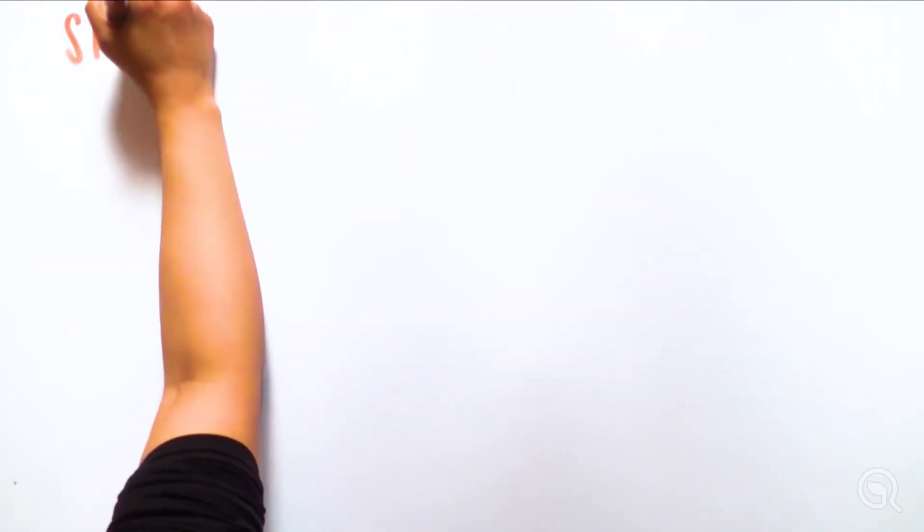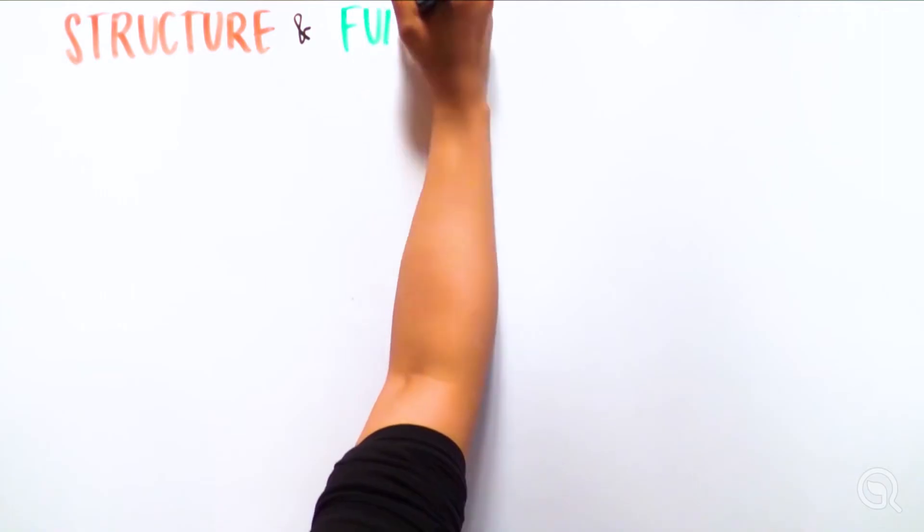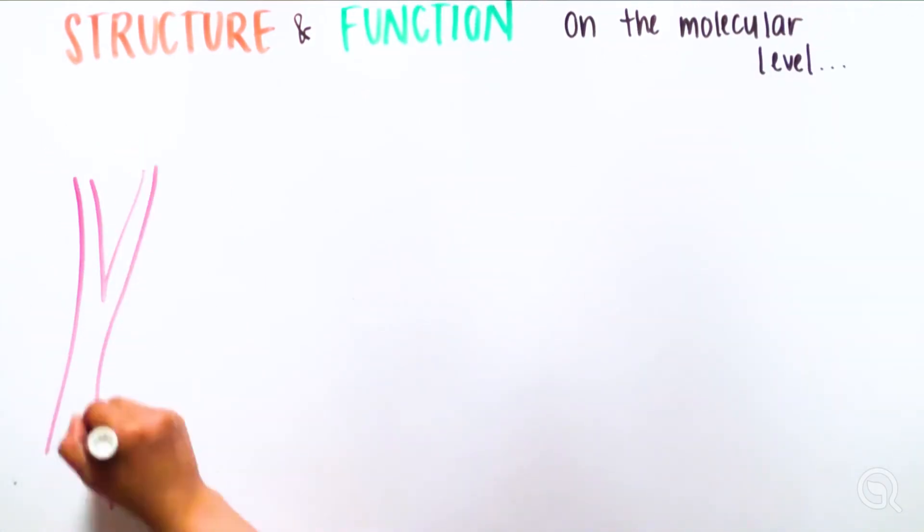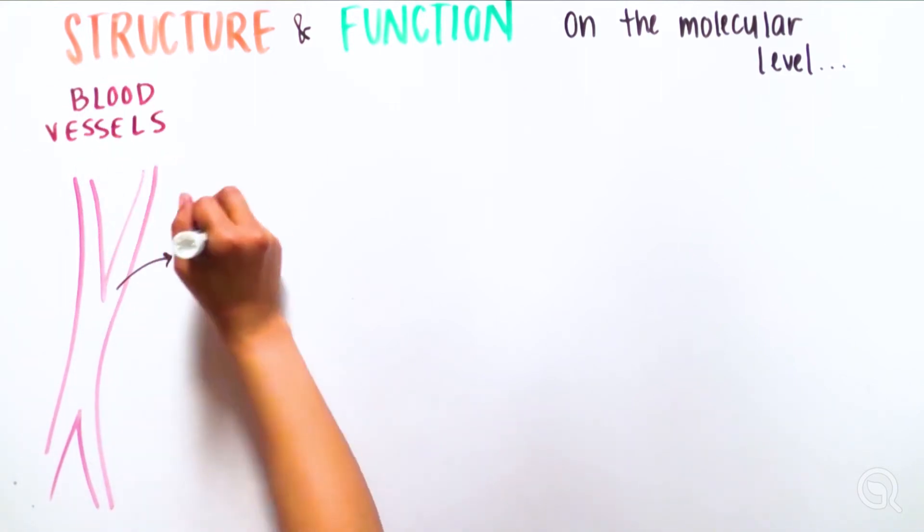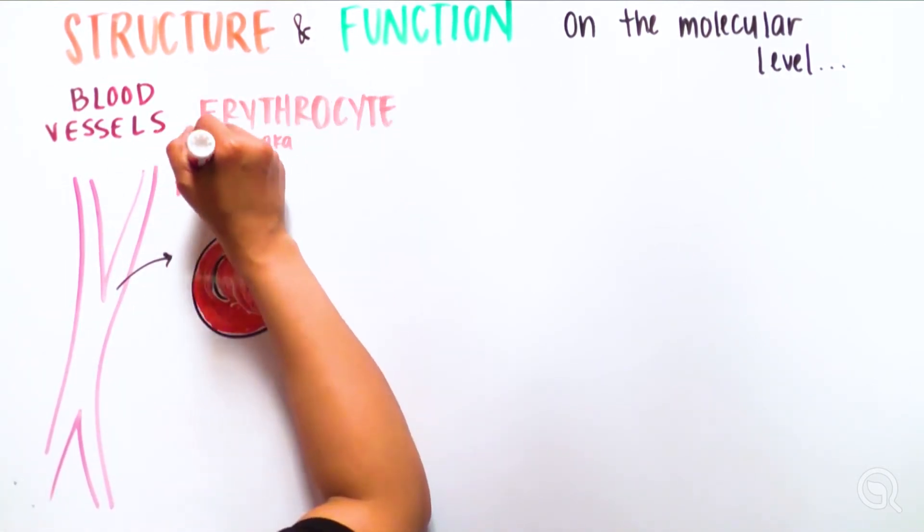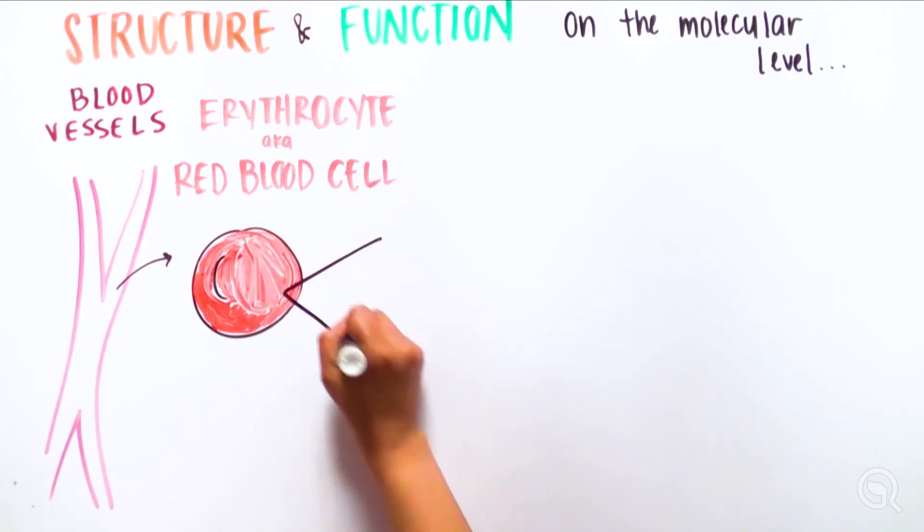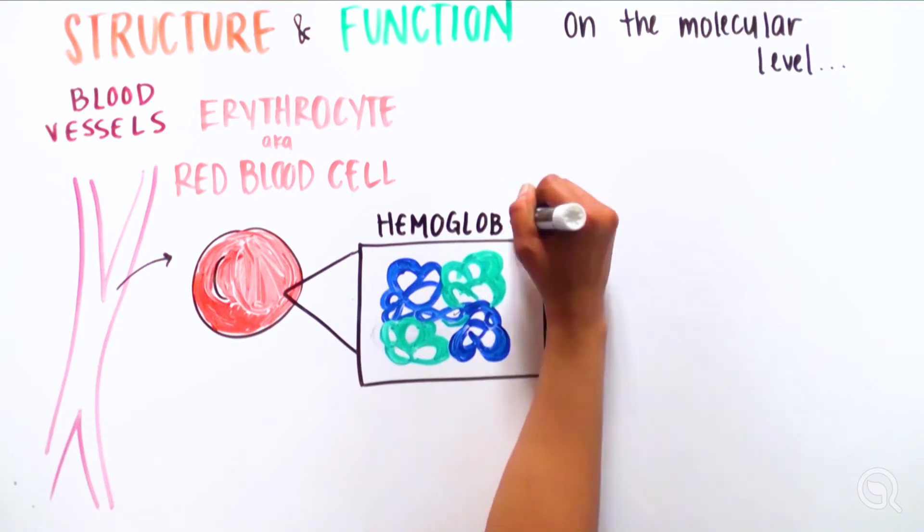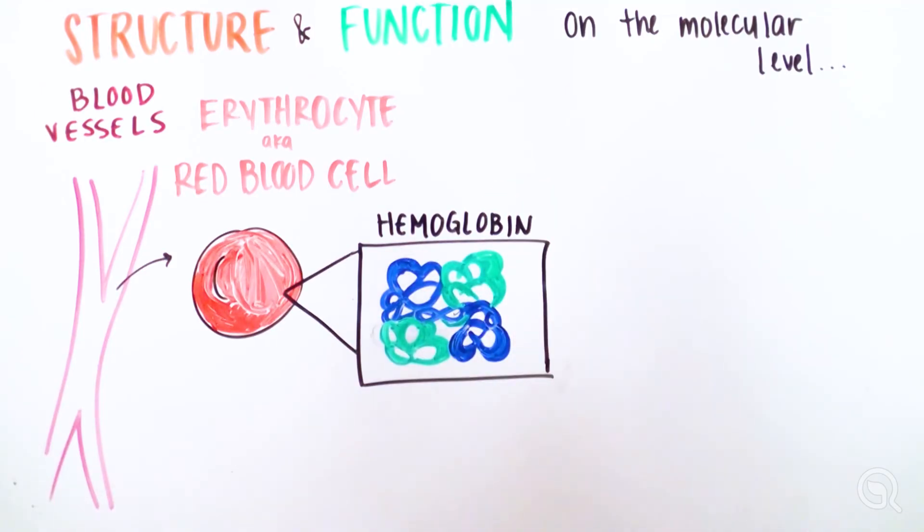The structure and function connection is found at all levels of biological organization, including the molecular one. Within the blood flowing through her blood vessels are erythrocytes or red blood cells. Inside each red blood cell is an important protein called hemoglobin. Each protein has a unique shape that allows it to function. A hemoglobin protein is globular shaped and made of four protein chains with each one folded onto itself.